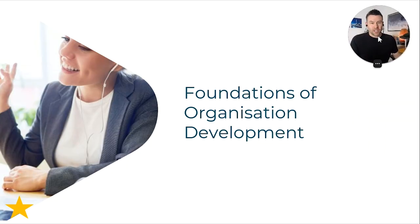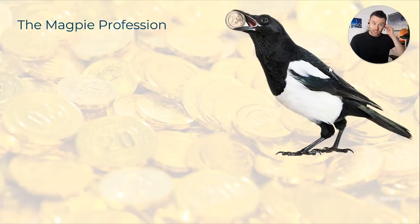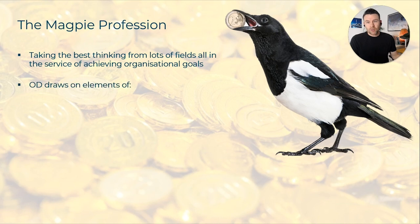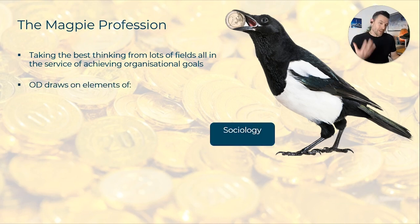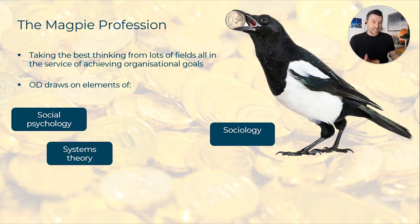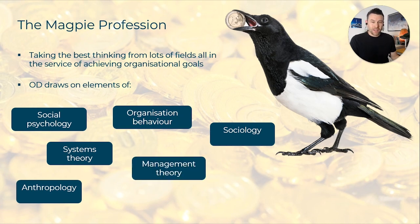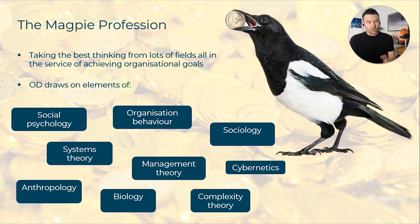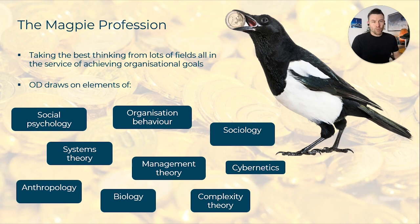Organisation development is often described as the magpie profession because we borrow from the thinking of lots of other professions. Working at such a broad level in organisations means we need lots of different approaches. OD draws upon sociology, social psychology, systems theory, anthropology, organisation behaviour, management theory, complexity theory, biology, and even cybernetics. There's always new research and new methods being developed, which is why many describe OD as a calling and a lifetime's work.